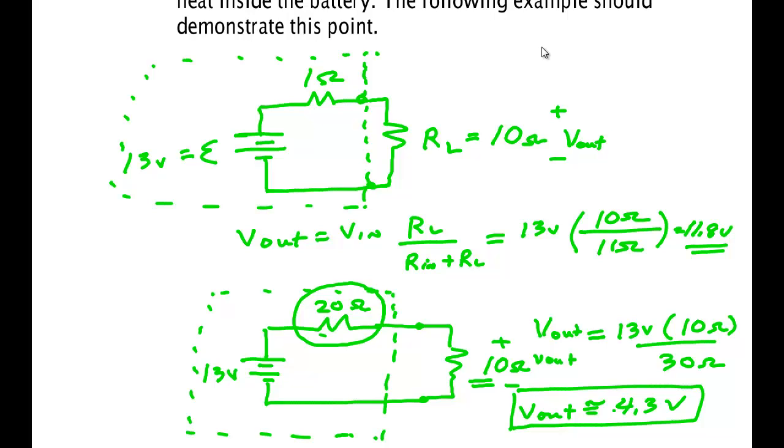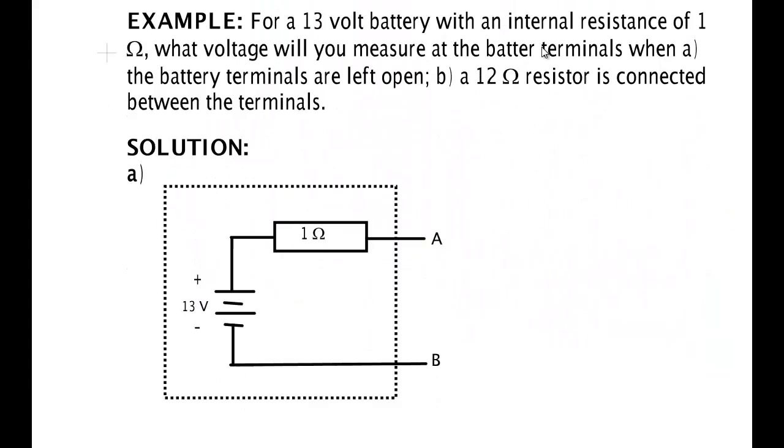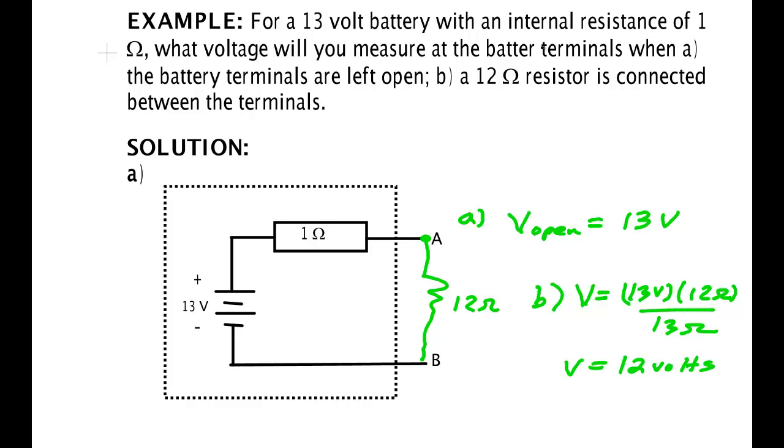Let me give you one last kind of practice. Now here's an example problem. It asks you what's the voltage in this circuit when it's open. The open voltage would be 13 volts. And then it says to connect this to a 12 ohm resistor. So for part B, V would be 13 volts times 12 ohms over 13 ohms, so V would be 12 volts. All right, that's how you work those type problems. See you on another video.